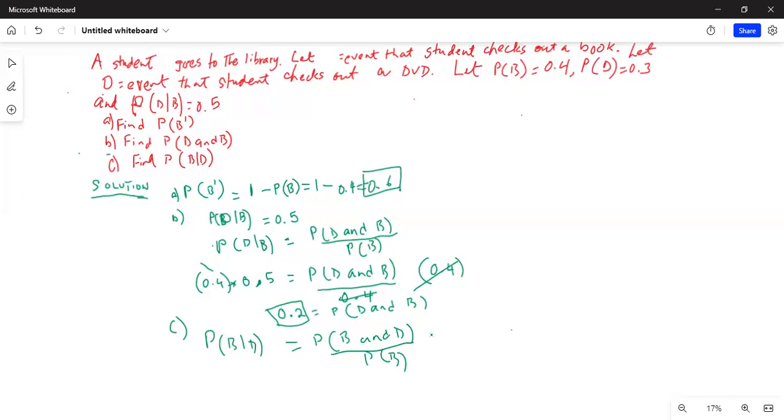Now B and D is the same as D and B, which is 0.2, divided by probability of D, which is 0.4.